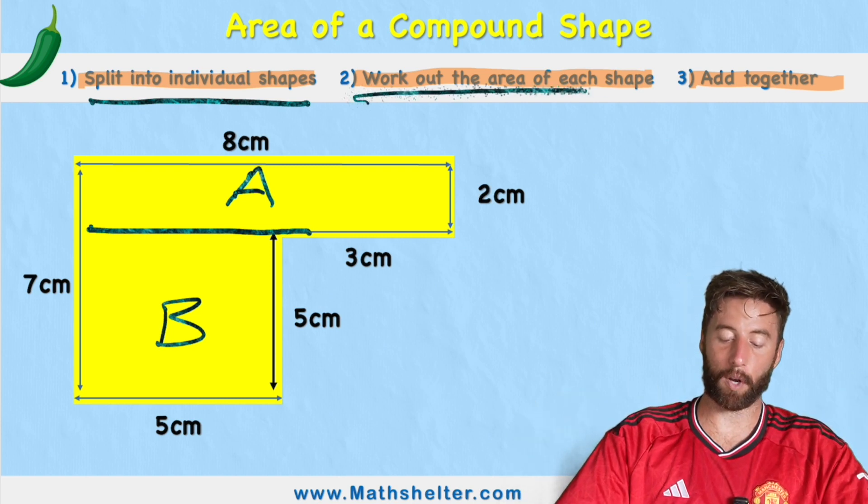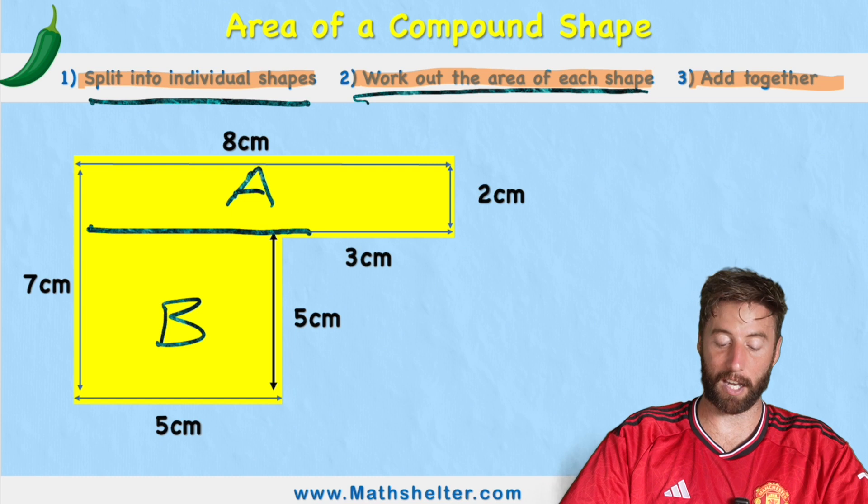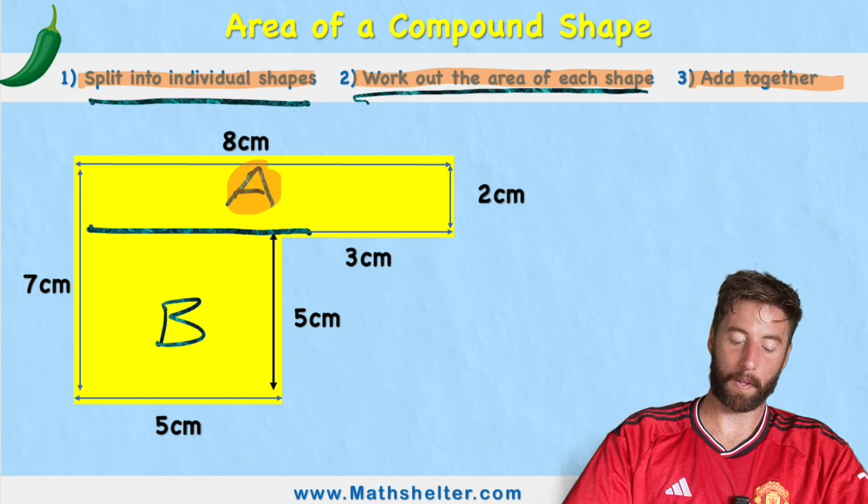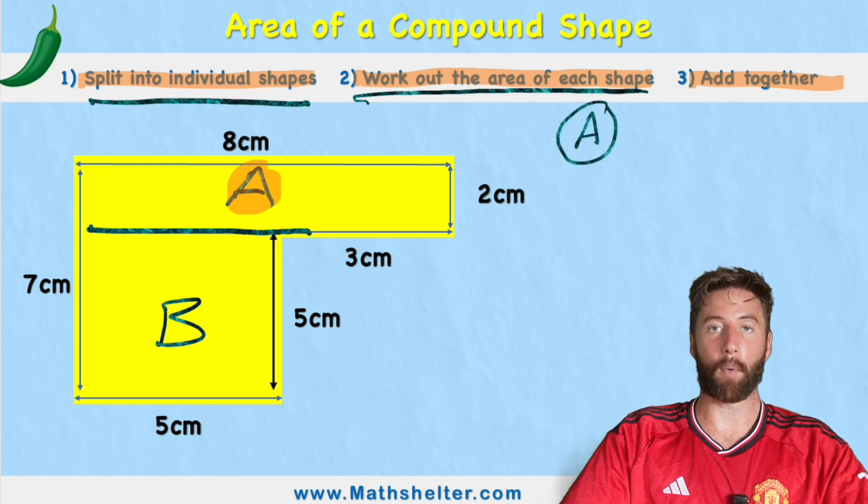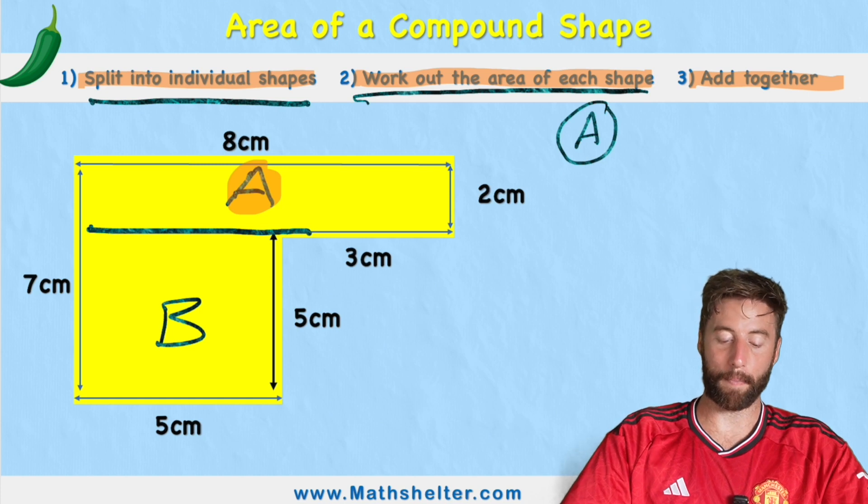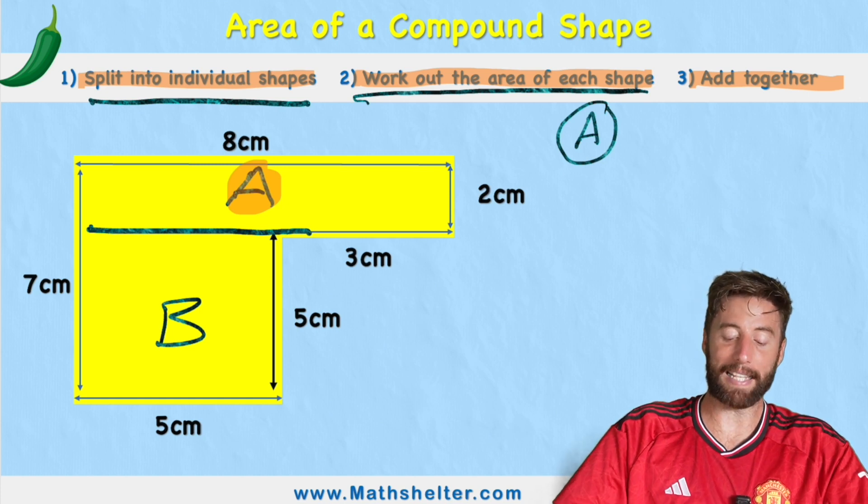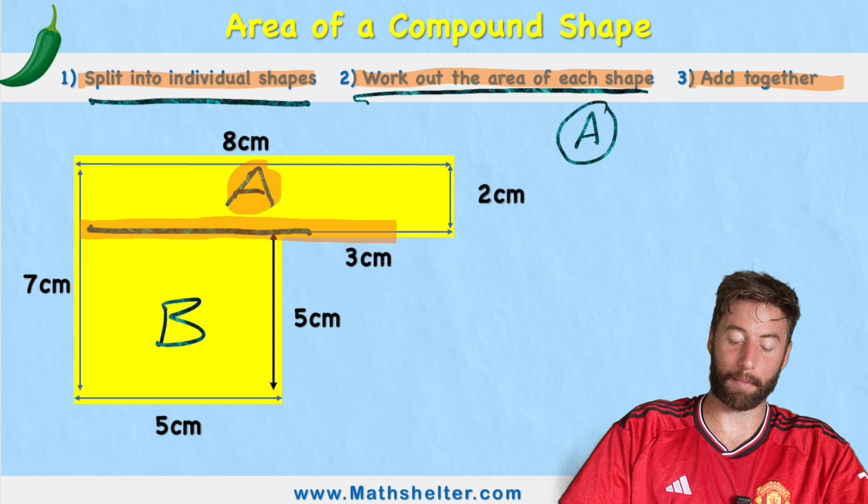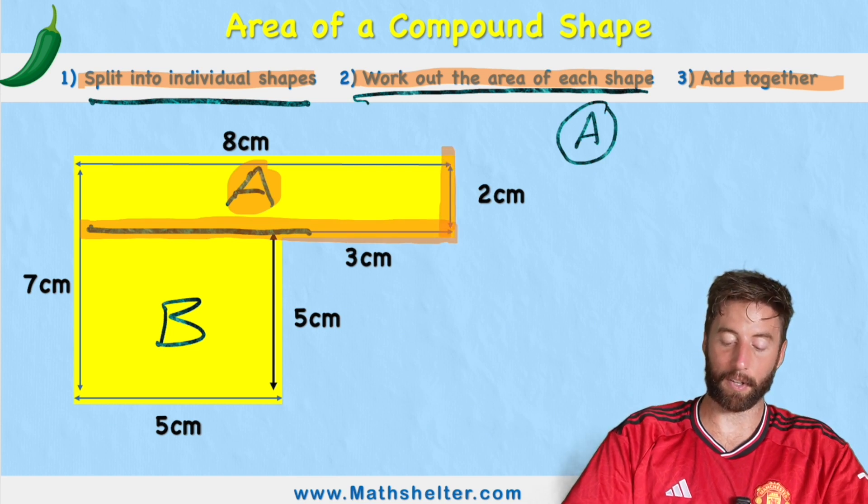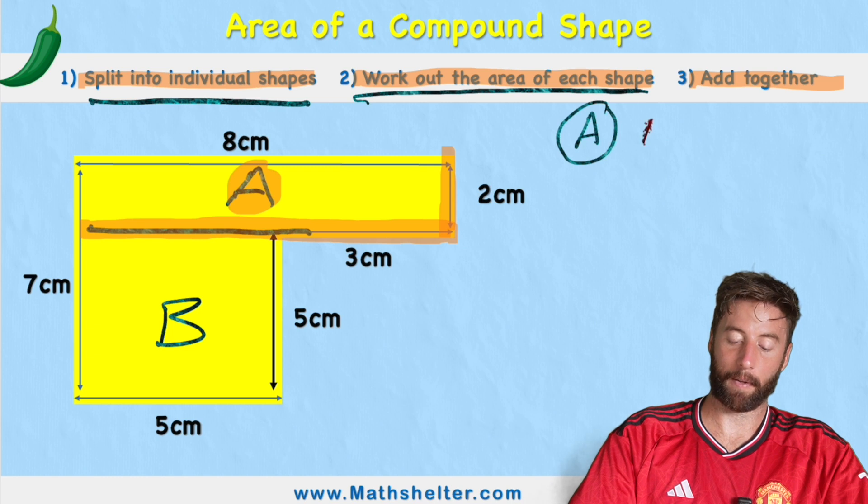So let's leave it like this and then we're going to work out the area of each of the individual shapes. So let's do A first of all, so I'm going to measure the area of shape A. Now when we're measuring area we need to understand the formula, which is that we measure the base, which is the length at the bottom, times the height, which is the length of the side. So we have area equals base times height.